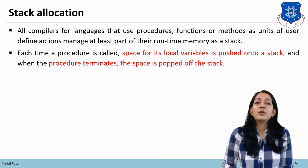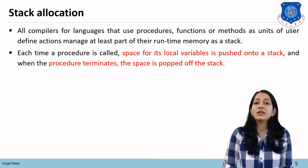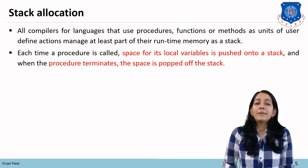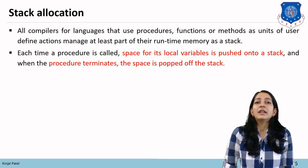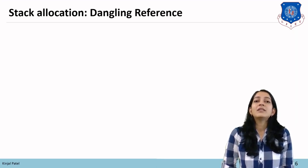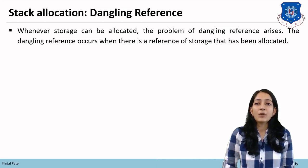In stack allocation, local variables are assigned and pushed onto the stack, and when a procedure is terminated the space is popped off the stack. However, when we delete any variable, that memory will not get deallocated in the stack. If we are referencing that deallocated memory, the problem is known as a dangling reference problem.